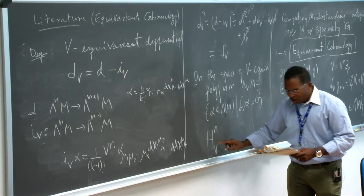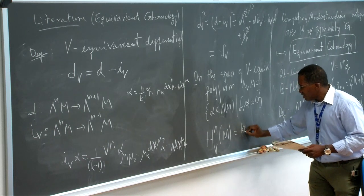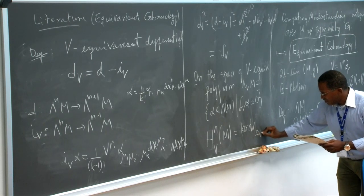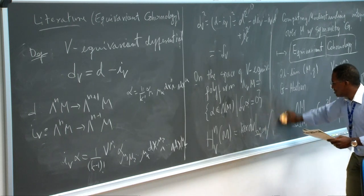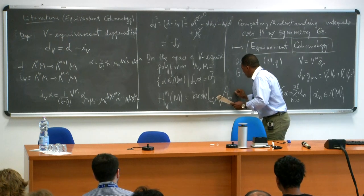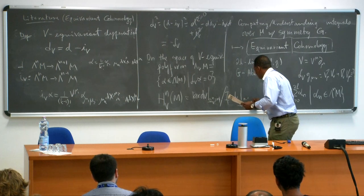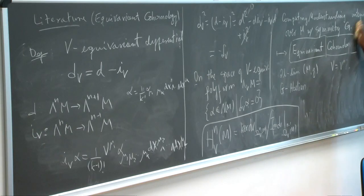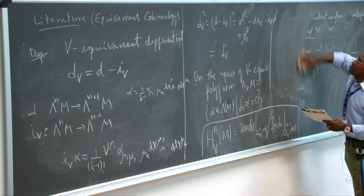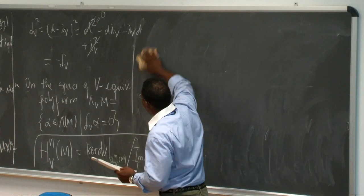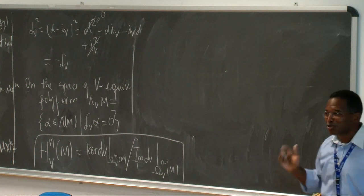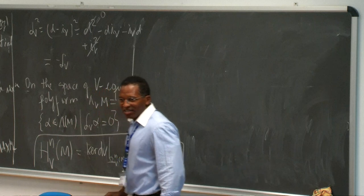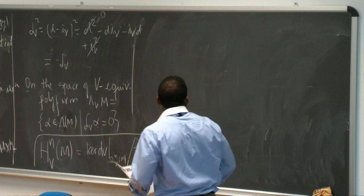The equivariant cohomology of my space M is the kernel of my equivariant exterior differential D_V acting on Ω^n_V(M), modulo the image of D_V acting on Ω^{n−1}_V(M). Our ultimate goal was integrals, so I need to relate integrals to cohomology classes.